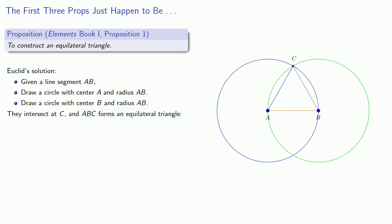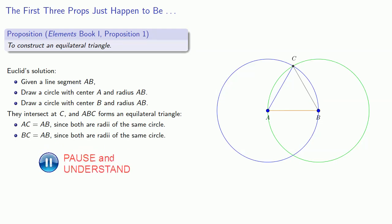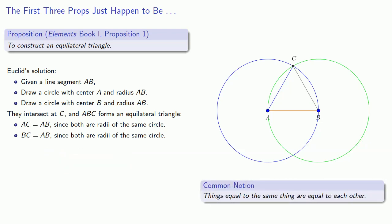So lastly, we need to show that we have an equilateral triangle. So AC is equal to AB since both are radii of the same circle. BC equals AB since both are radii of the same circle. And our common notion says that things that are equal to the same thing are equal to each other. So AC is equal to BC.